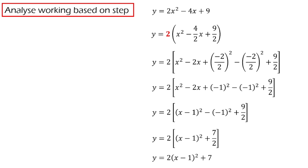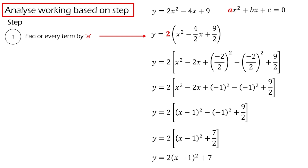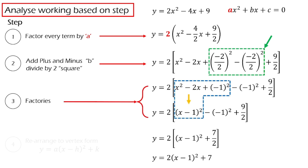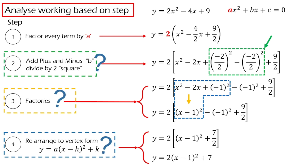Let's break it down into the steps. The first step is we factor every term by a. As you can see in this equation, y = 2x² - 4x + 9, our a is 2, so we factor the equation by 2. The second step: we add ±(b/2)². The third step is we factorize it. And the final step, we rearrange it into the vertex form. I understand that steps two, three, and four are the steps that students find very difficult to understand.